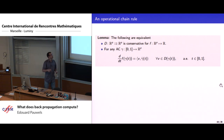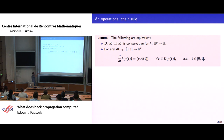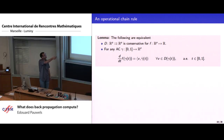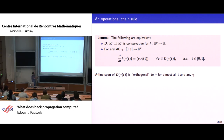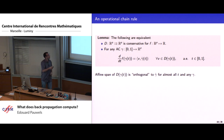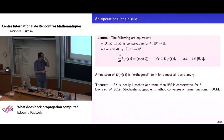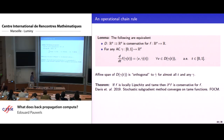D is conservative for f if and only if: for any absolutely continuous path gamma, the value of f along the path is differentiable for almost all t, and the value of the derivative equals this dot product — crucially, the value of the dot product should not depend on which v in D we choose. The geometric view is that the affine span of D(gamma) must be orthogonal to the velocity gamma-dot for almost all t, and this must hold for any absolutely continuous curve gamma.